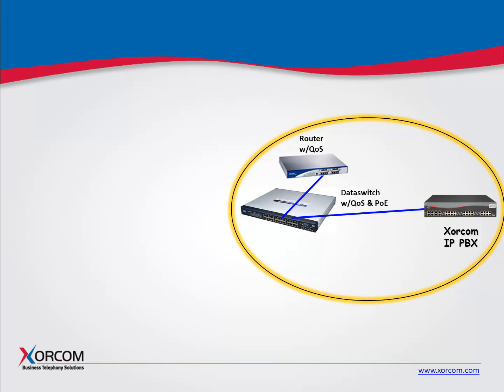PoE stands for Power Over Ethernet — that is providing power to IP telephones through the Cat5 or Cat6 cabling. The router also can provide QoS if you're using a voice over IP service or something called SIP trunking, which stands for Session Initiation Protocol. Basically, it's a protocol that's used to talk over broadband.